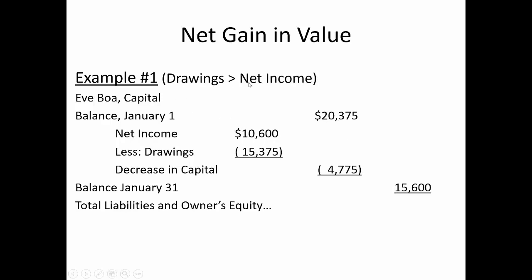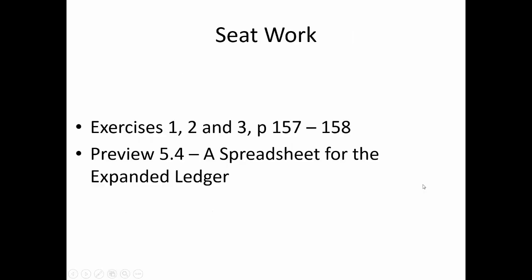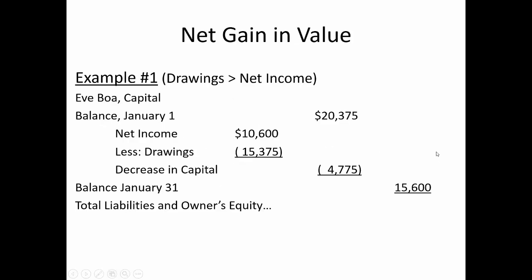The last scenario is where drawings are greater than net income. Here we have a net income of only about $10,600, but drawings taken out are greater than that. So even though we have net income, we show the capital as decreasing by $4,775 for our final total. And that is the end of this lesson.